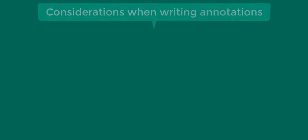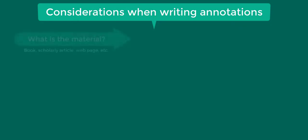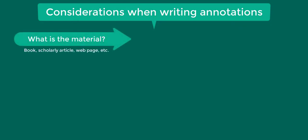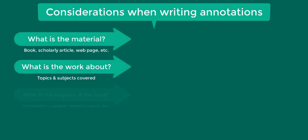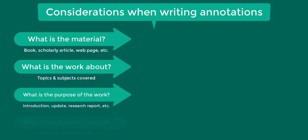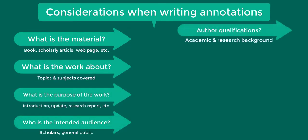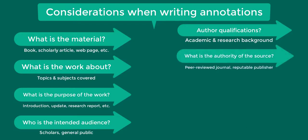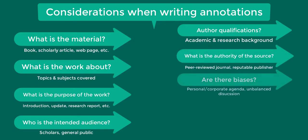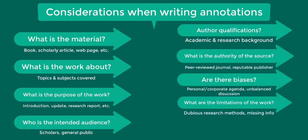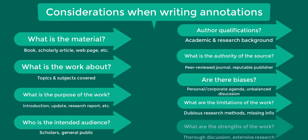Here are some questions to consider when writing annotations: What is the material? What is the work about? What is the purpose of the work and who is the intended audience? Who are the authors and what are their qualifications? What is the authority of the source? Are there any clear biases? What are the deficiencies or limitations of the work? And what are the strengths of the work?